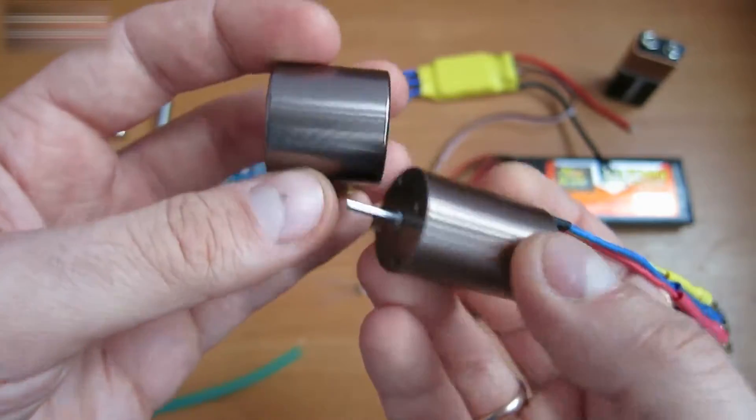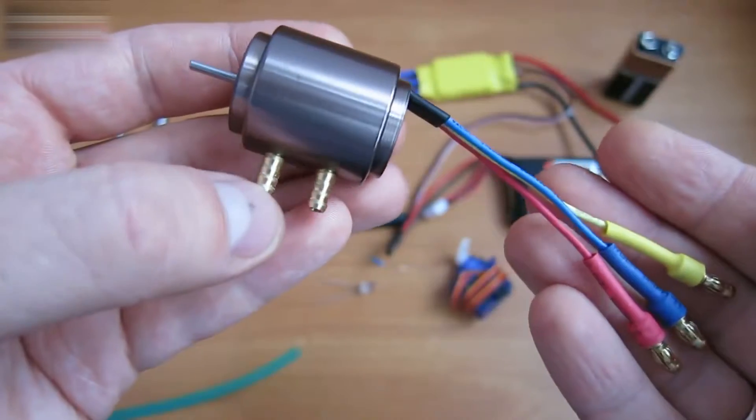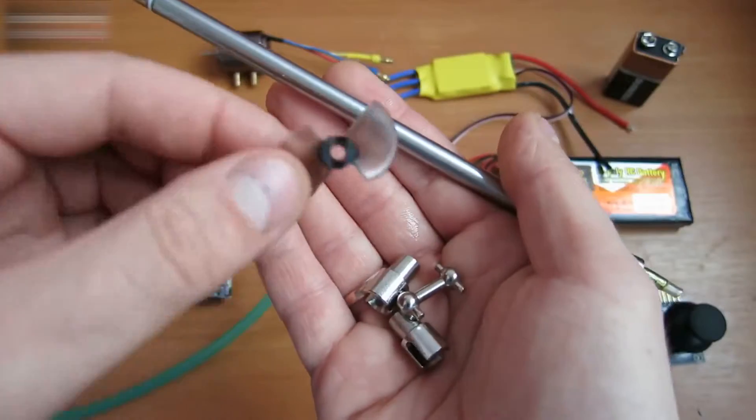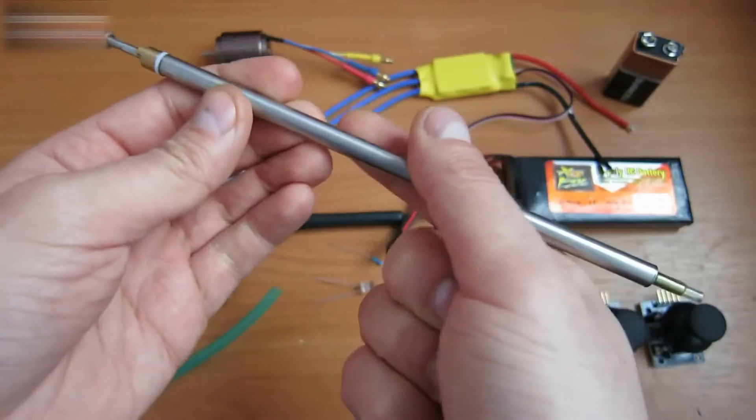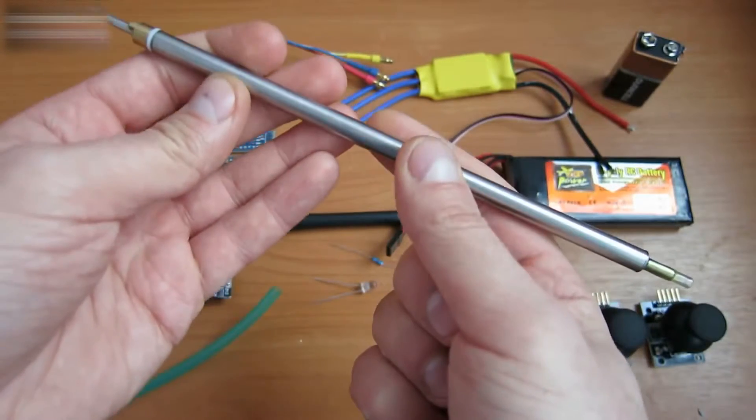This water cooling jacket will do it. We also need a small screw, transmission, and we will use this steel tube to connect the motor to the propeller.